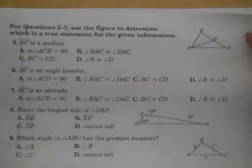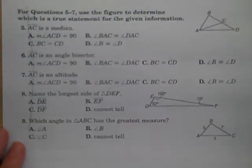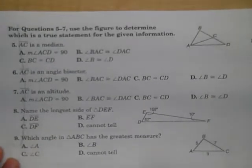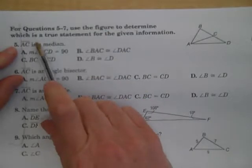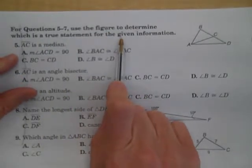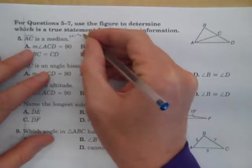So A to B, that segment, is vertex to midpoint. Next we will look at numbers five through seven. Use the figure to determine which statement is true for the given information. Median, remember what we just said, vertex to midpoint.